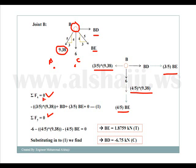If I do sigma x, I will have BD plus 3/5 BE minus 3/5 times 9.38 equals zero. That's equation number one.